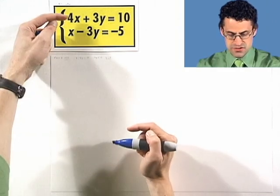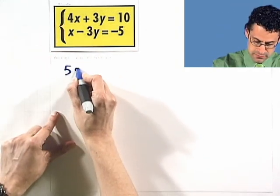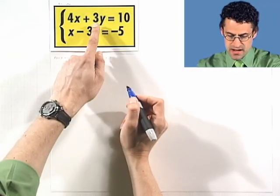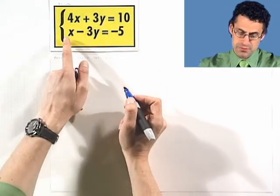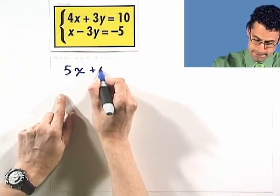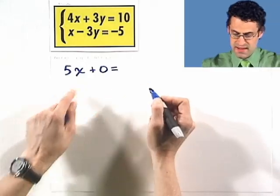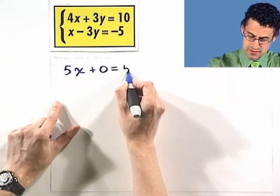So, I'm going to add the two equations. 4x plus x is 5x. Here I've got a 3y, but now it's a minus 3y or 3y plus negative 3y, however you want to say it. All roads lead to 0. And that equals 10 plus negative 5, or 10 minus 5, which is 5.